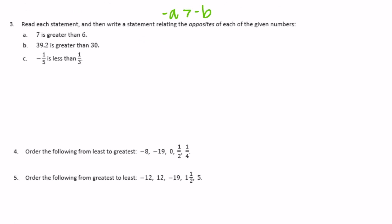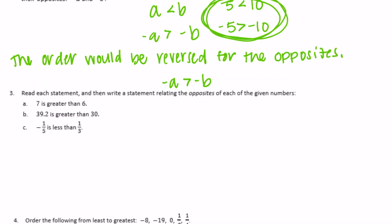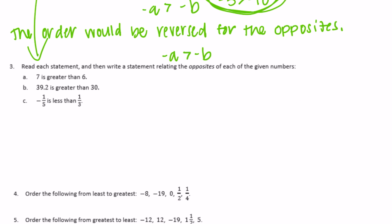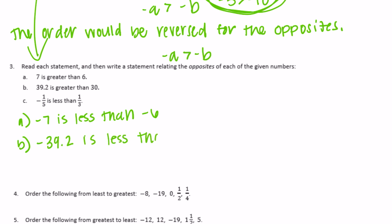Number 3: read each statement and write a statement relating the opposites of each given number. So 7 is greater than 6 — the opposite statement would be: negative 7 is less than negative 6. For part B: negative 39 and 2 tenths is less than negative 30. For part C: 1 fifth is less than 1 third, so the opposite is: negative 1 fifth is greater than negative 1 third. And those are all true.